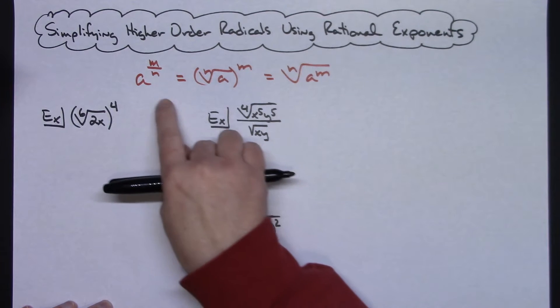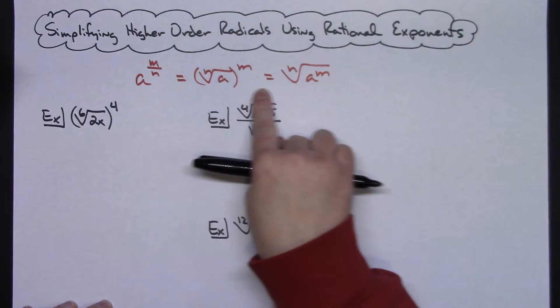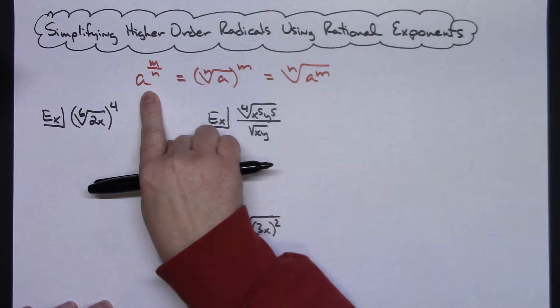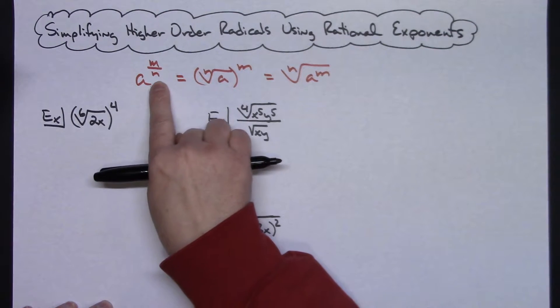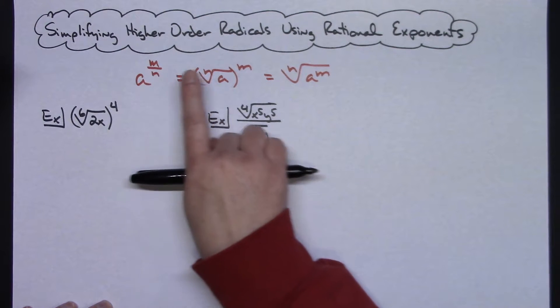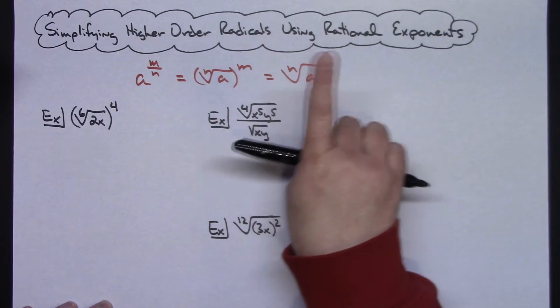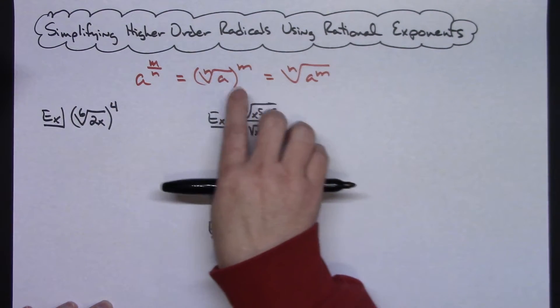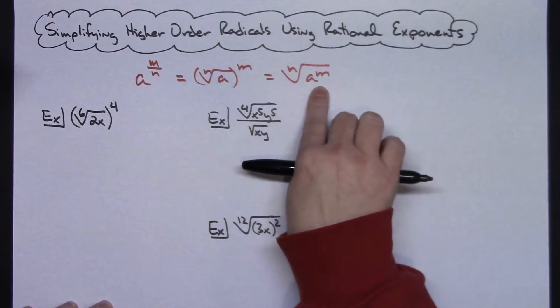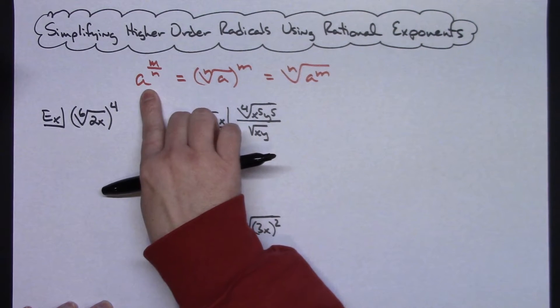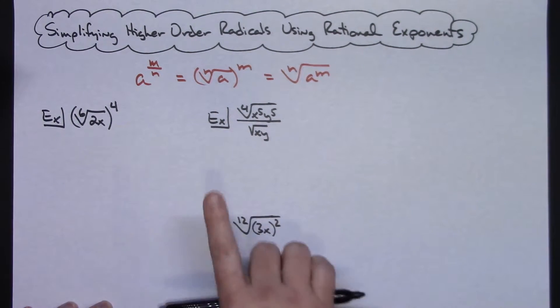Now to be able to do this, we're going to be implementing this property that we have here. If we've got a base raised to a rational exponent, then we can rewrite that in either one of these two radical forms. But we're going to implement this backwards. The rule does work both ways. If I've got a radical, then I can rewrite it as a rational exponent, and that's the way I'm going to do this.